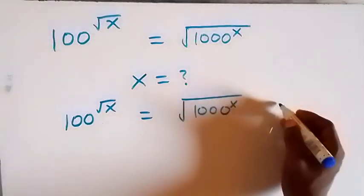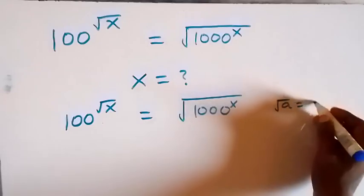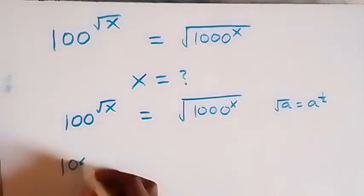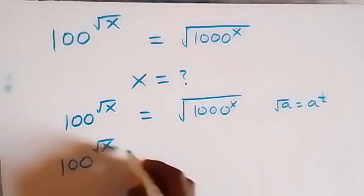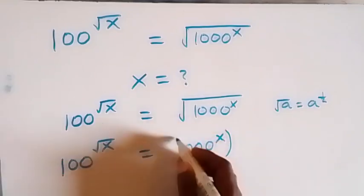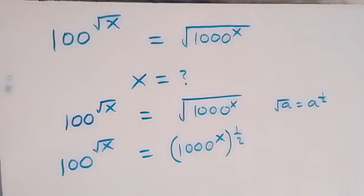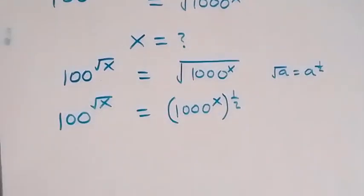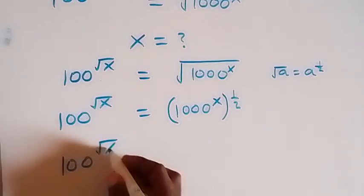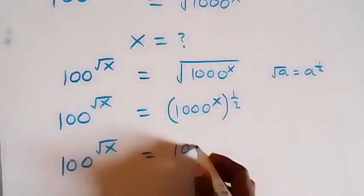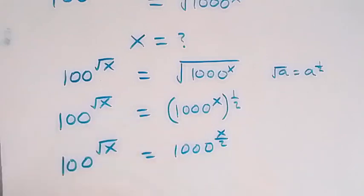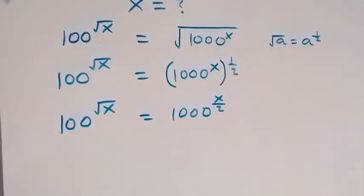From here we can rewrite this — when we have root a, this is the same thing as a raised to power half. So this becomes 100 raised to power root x, equals 1000 raised to power x then raised to power half. This power we multiply, and we can write this as 100 raised to power root x equals 1000 raised to power x over 2, from the law of indices.